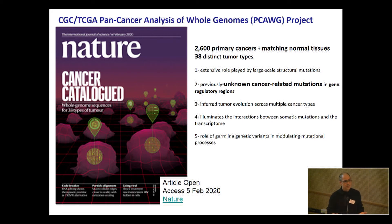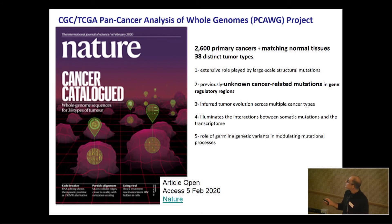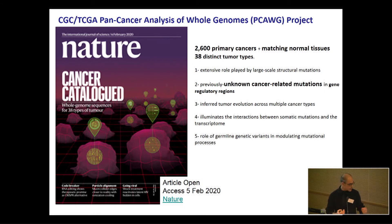Two days ago, there was a special issue in Nature — a fantastic issue — with plenty of papers dealing with cancer characterization at the genomic landscape. This consortium analyzed 2,600 primary cancers with their normal tissues across 38 distinct tumor types. One key result is that previously unknown cancer-related mutations are found in gene regulatory regions — outside of the coding regions — in enhancers and different regions that can control the chromatin domain. This is a very important source of information for people working on non-coding RNAs.